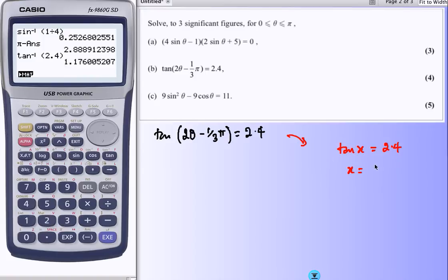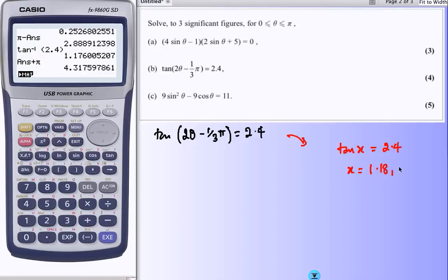tan would be 1.18, the angle would be 1.18. And with tan, it's very easy for the extra angles. They just cycle in 180s. So we simply add on 180 for the next one. Add on π, 180, π radians, so 4.32.